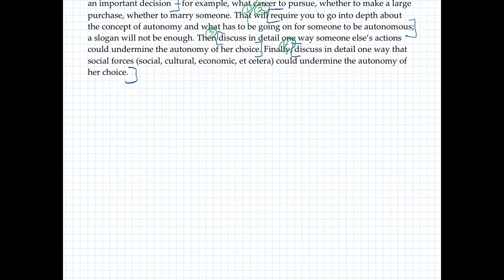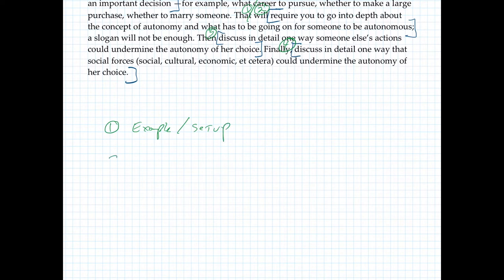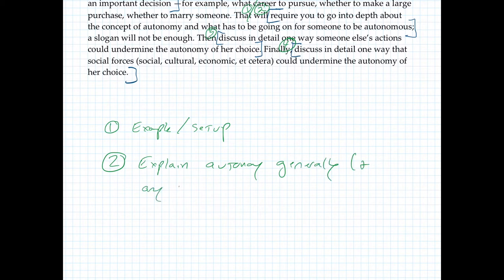As you can see, the way I like to assign these essay topics is usually you do a bunch of explanation and then I sort of raise some problems or raise some challenging tasks for you to do. So there are basically four main tasks that comprise this essay. You're going to write the example and setup, autonomy generally, and any specific things that you'll need.